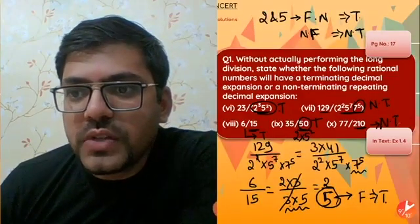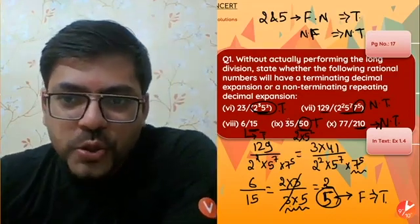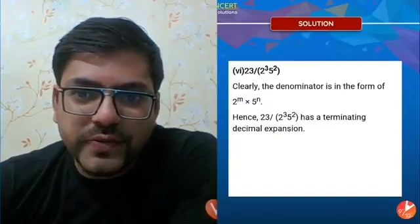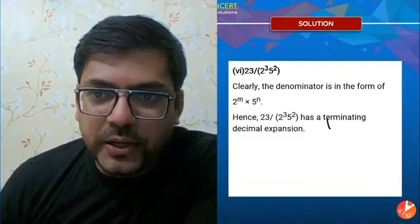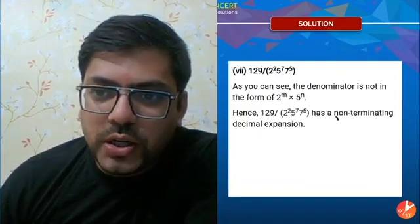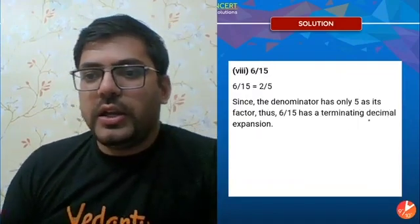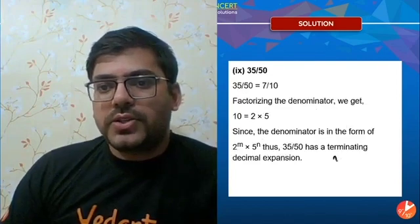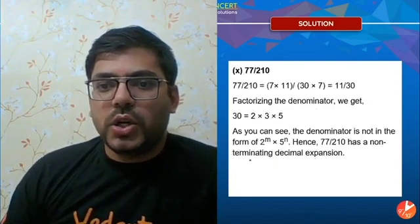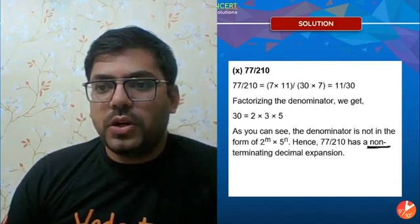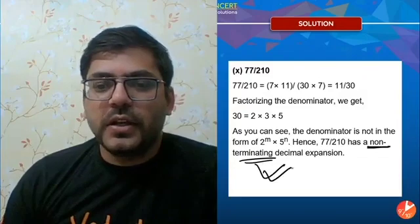Summary of parts 6–10: part 6 is non-terminating, part 7 is non-terminating, part 8 is terminating, part 9 is terminating, and part 10 is non-terminating. So parts 7 and 10 are non-terminating; the rest are terminating.